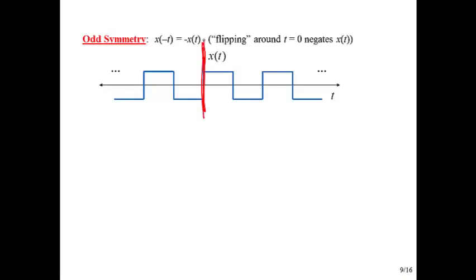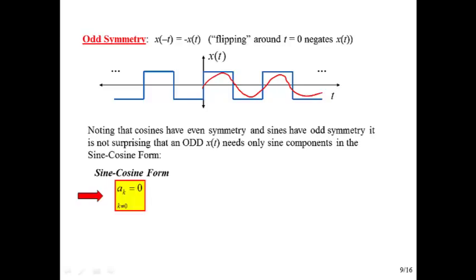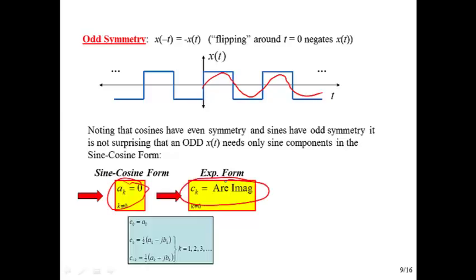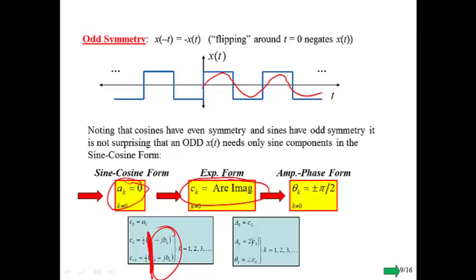Now, odd symmetry, if you flip about t equal to 0, you get the negative. That's how we recognize odd symmetry. We see that looks like a sine wave. And so we conjecture that maybe I only need sines to build that. And in fact, that is true. I only need sine components. Therefore, the coefficients for the cosines will be 0. And then the impact is that the c sub k's are all purely imaginary. And if it's purely imaginary, it's living up here or down here. So the angle is going to be plus or minus pi over 2. So that all makes complete sense.